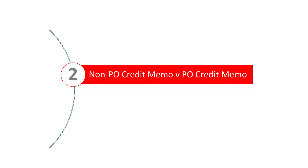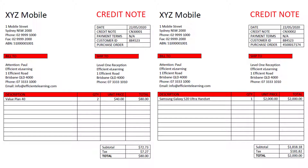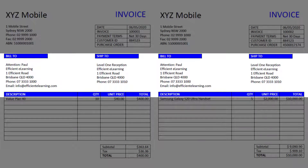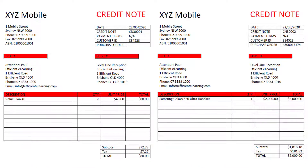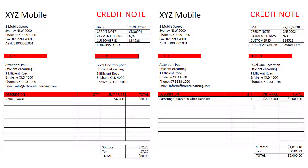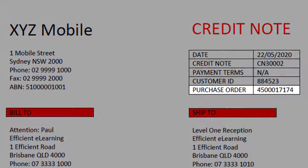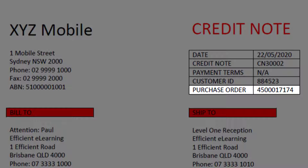Now let's discuss the difference between a non-PO credit memo and a credit memo referencing a purchase order. Here are the two documents side-by-side. Note the difference in color scheme: the Invoice document has blue heading backgrounds, while the Credit Note document has red heading backgrounds. Some vendors use a different color scheme on credit notes to ensure the document is not accidentally posted as an invoice. Within the credit memo scenarios, visually, the only real difference is the purchase order field. For a non-PO credit memo, this field is blank, while for a credit memo referencing a purchase order, the field is populated with the relevant purchase order number.